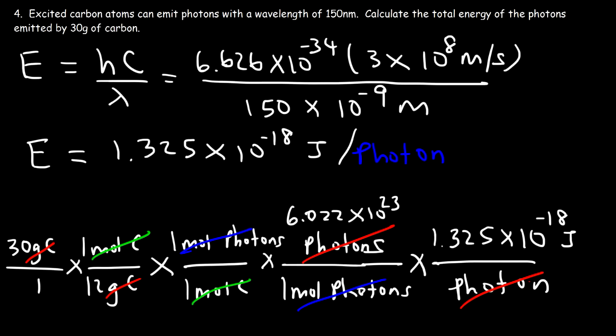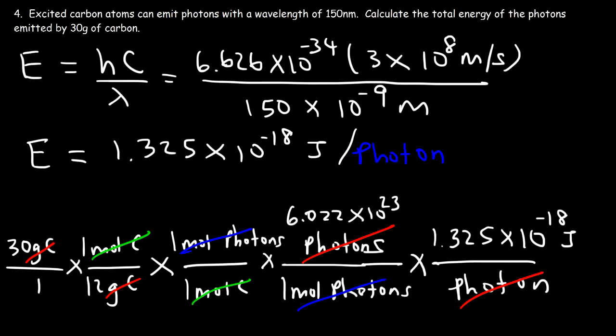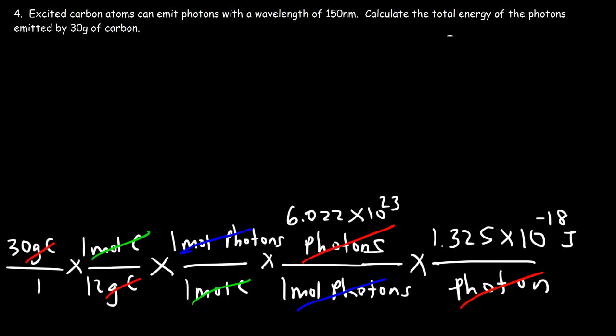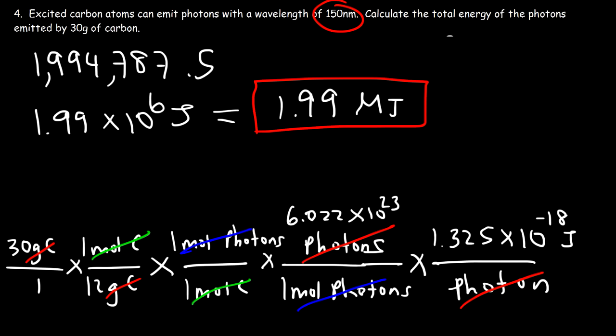Calculating: 30 divided by 12, multiplied by 6.022 times 10 to the 23, then multiplied by 1.325 times 10 to the negative 18, gives approximately 1,994,787 — about 1.99 times 10 to the 6 joules, which equals 1.99 megajoules. So if each carbon atom in a 30-gram sample emits a single photon at 150 nanometers, the total energy emitted is 1.99 megajoules.